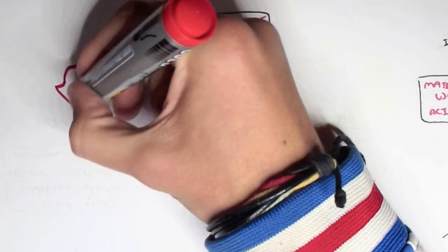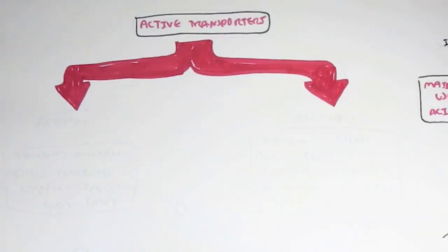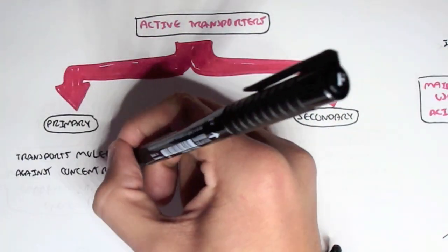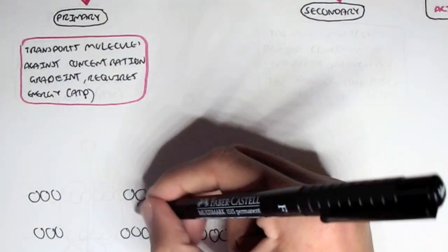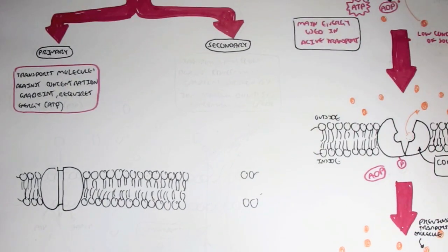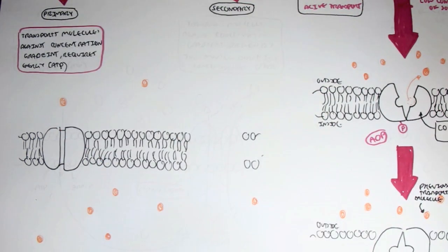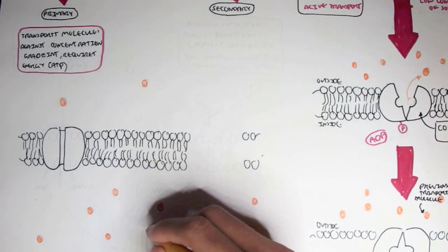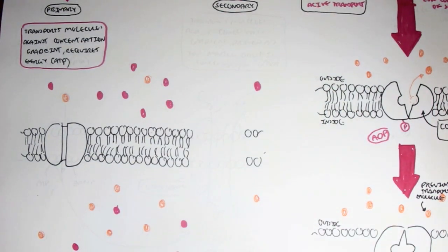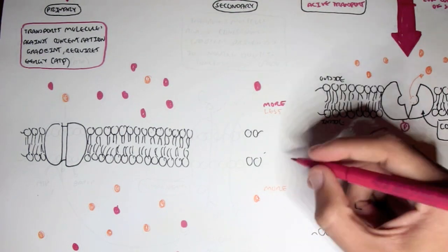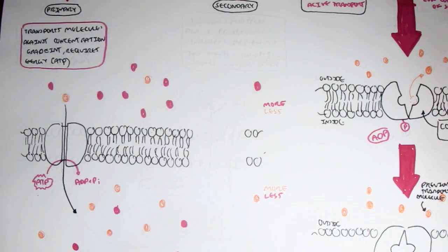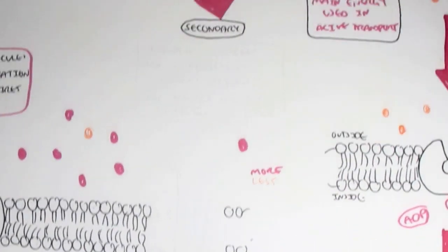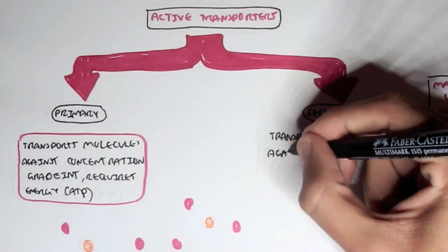Active transport can be divided into primary and secondary. In primary active transport, molecules are transported against their concentration gradient, and this requires energy in the form of ATP. In contrast, secondary active transport does not require ATP. Instead, it is driven by another molecule moving down its concentration gradient.